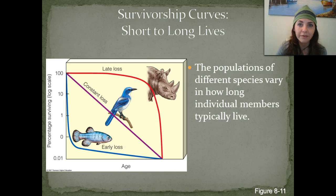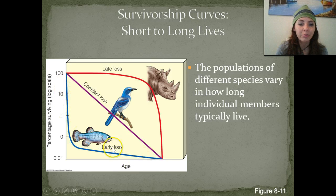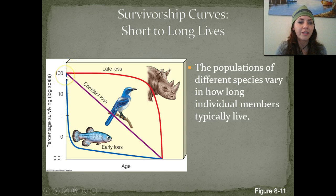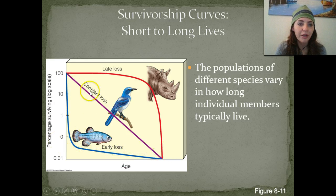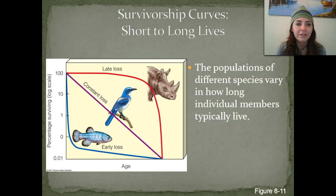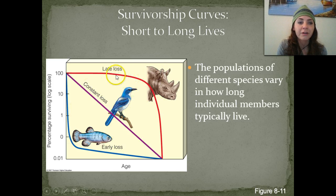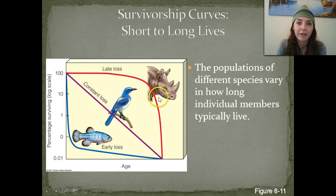Short versus long lives — survivorship curves. We have early loss, which is an example of an R-selected species: we start with tons of them, and then they die off very, very rapidly. We have constant loss species, such as birds, which constantly lose individuals to various factors but without a drastic drop right at the beginning. Then we have K-selected species showing late loss — most of them survive, with significant losses only late in their lives when they're dying of old age.